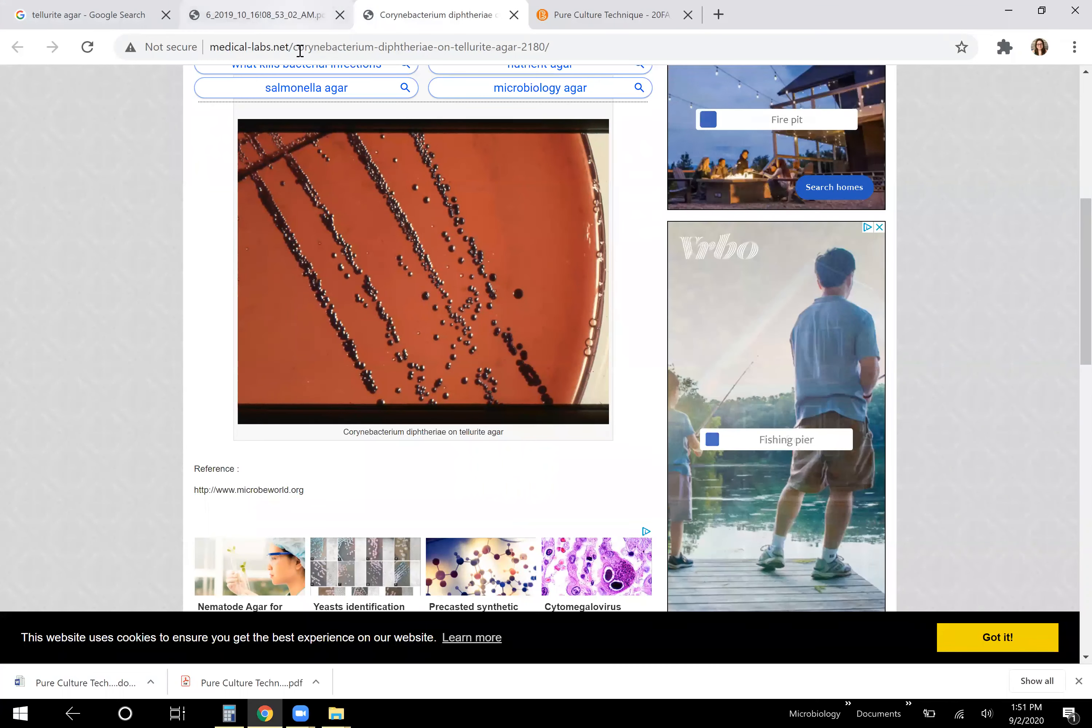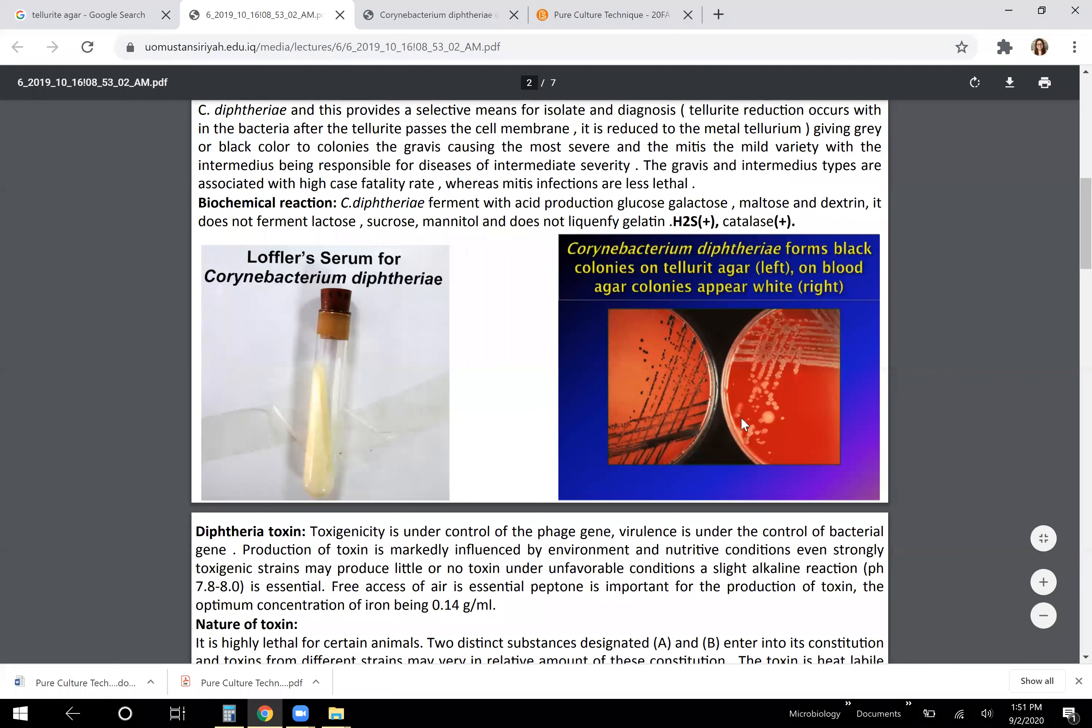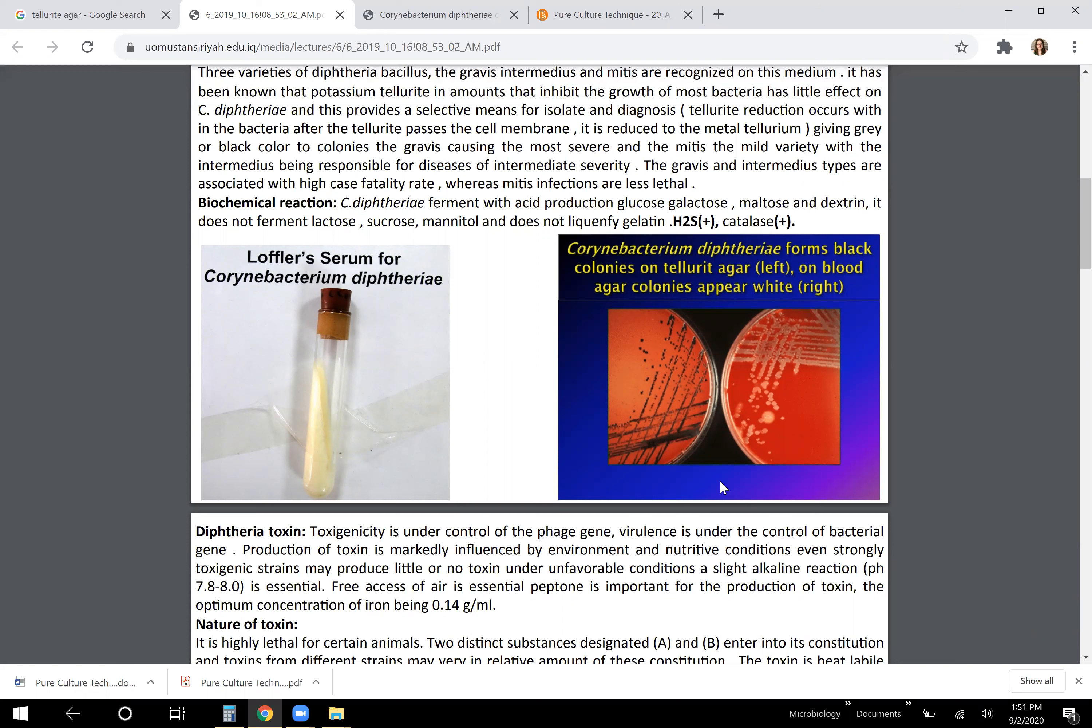So if you look at this picture, there is a comparison between tellurite agar on the left and blood agar on the right, which even though they both have a red background and look similar, the white colonies are on the blood agar because there's no tellurite crystals in there that would cause the bacteria to take on that black color.